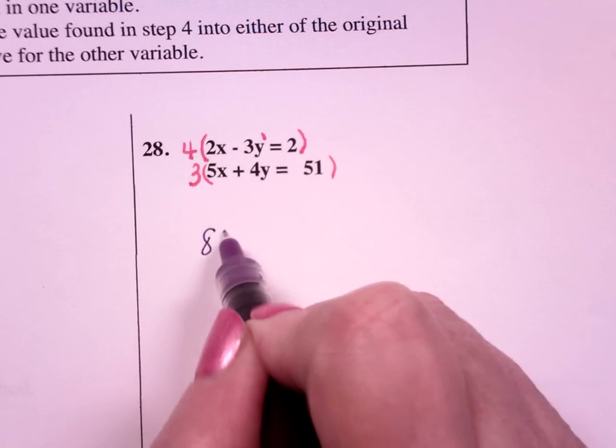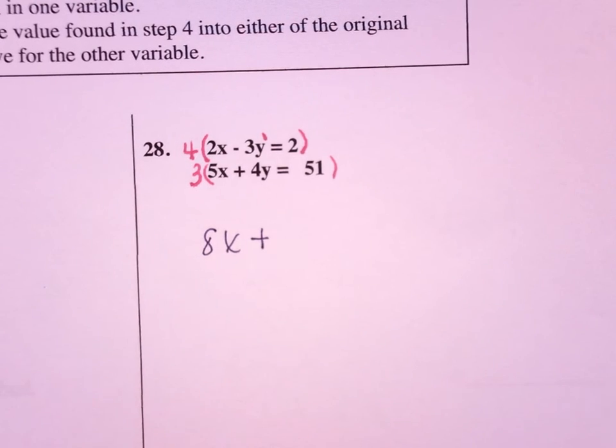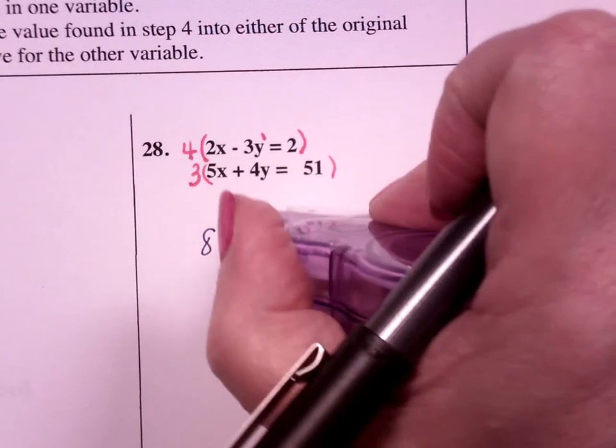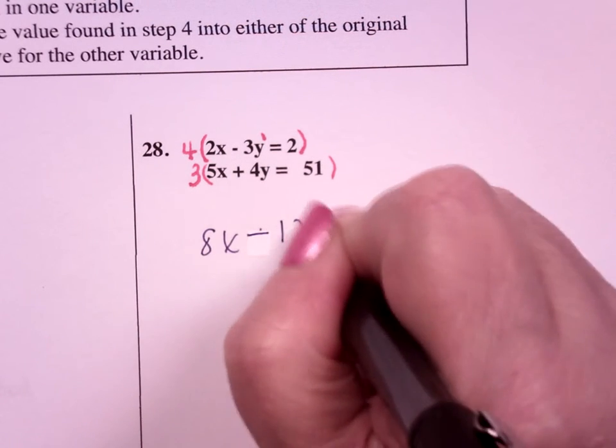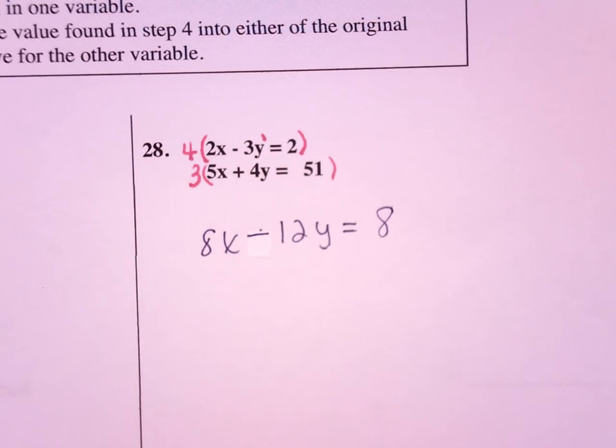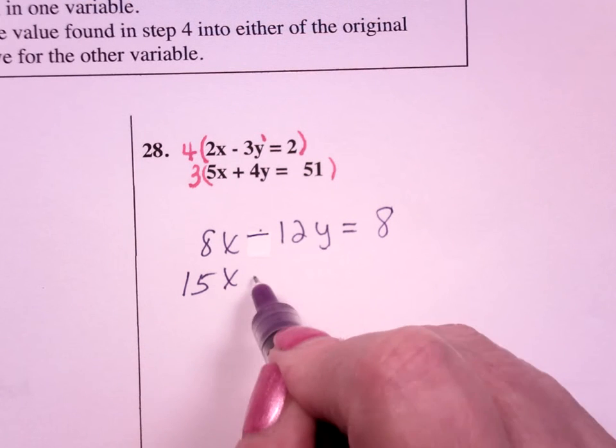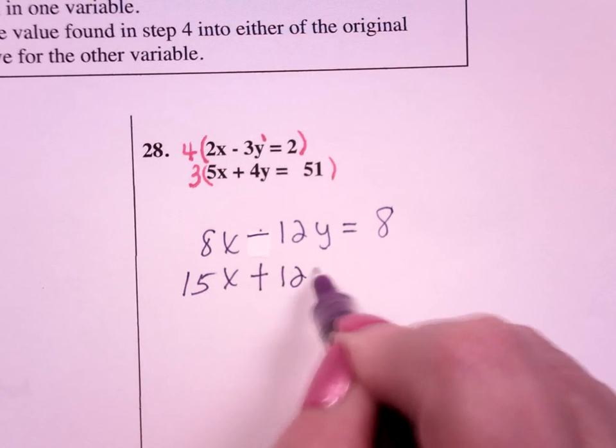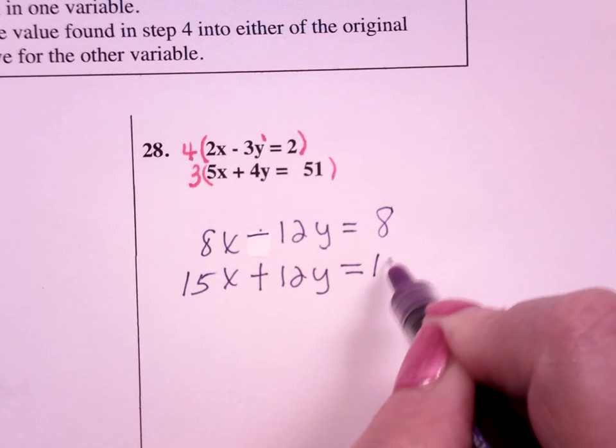So this gives me 8x minus 12y equals 8, because everybody all the way across gets multiplied by 4. And 15x plus 12y equals 153.